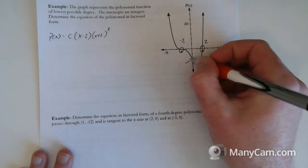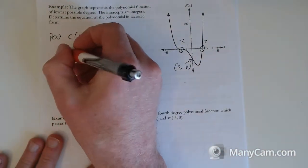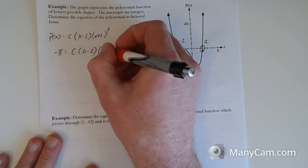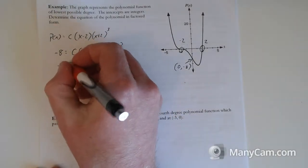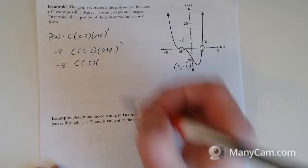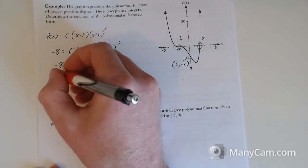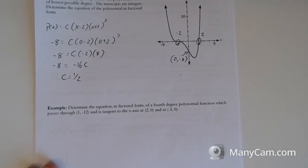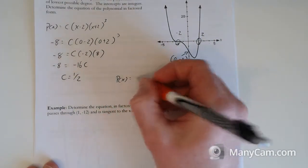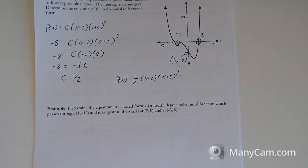So this is actually the point 0, negative 8. That's going to be the point that we sub in. So negative 8 equals c times 0 minus 2 times 0 plus 2 cubed. That needs to fall on our line. This is just like what we did in quadratics in grade 11. So I think this is actually kind of not too bad. So negative 8 is equal to c times negative 2 times 8. So that is negative 16c. c equals negative 8 divided by negative 16. So c equals 1 half. Just a simple solving. And then you sub it back into the equation.